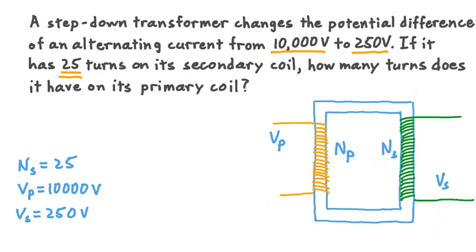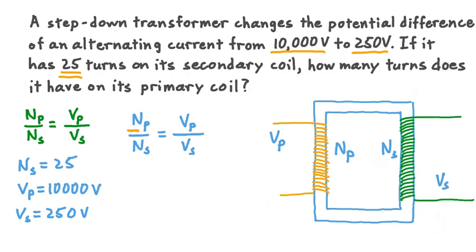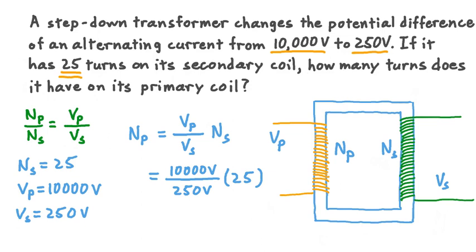In order to do it, we can recall a relationship between primary and secondary voltage and number of turns. This relationship says that the ratio of the turns — primary to secondary — is equal to the ratio of potential differences — primary to secondary. We want to solve for N sub P, so we multiply both sides of the equation by N sub S. That term cancels out on the left-hand side, giving us N sub P equals V sub P divided by V sub S, all multiplied by N sub S. Substituting in: V sub P is 10,000 volts, V sub S is 250 volts, and N sub S is 25. Calculating this result, we find an answer of 1,000 — that's the number of turns in the primary coil of this transformer.